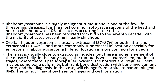Orbital rhabdomyosarcoma is usually extraconal, or both intra- and extraconal, and more commonly supranasal in location, especially for embryonal rhabdomyosarcoma. The mass is usually close to extraocular muscles, but there is no enlargement of the muscle belly. In the early stages, the tumor is well circumscribed.